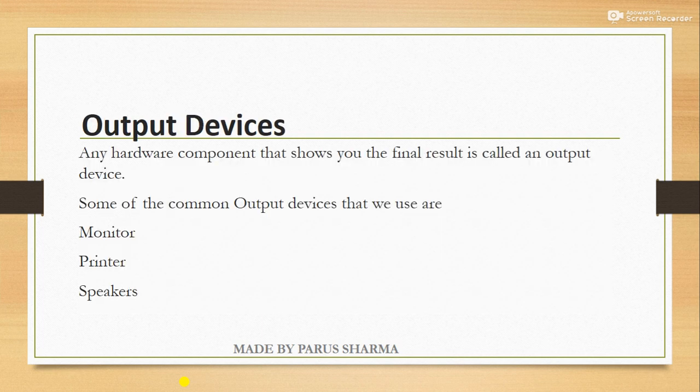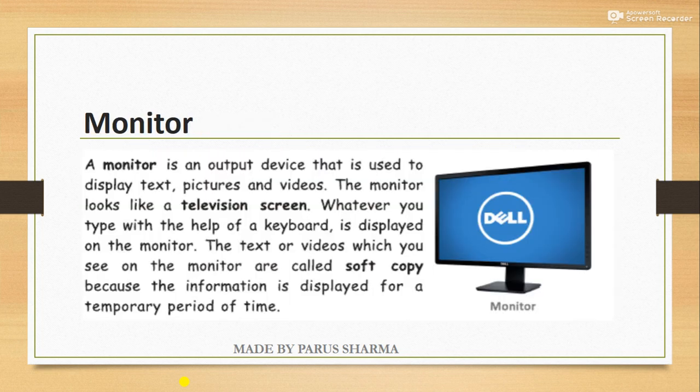Output devices are the components used to get the final result on your computer. Some common output devices are monitor, printer, and speaker. The monitor is an output device which looks like a television screen on which you can watch movies, videos, and stories, and it can show you a soft copy of your work done on a computer.